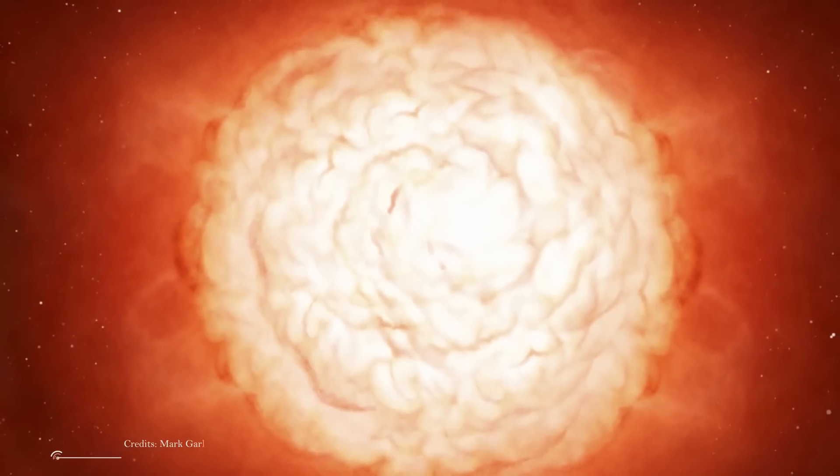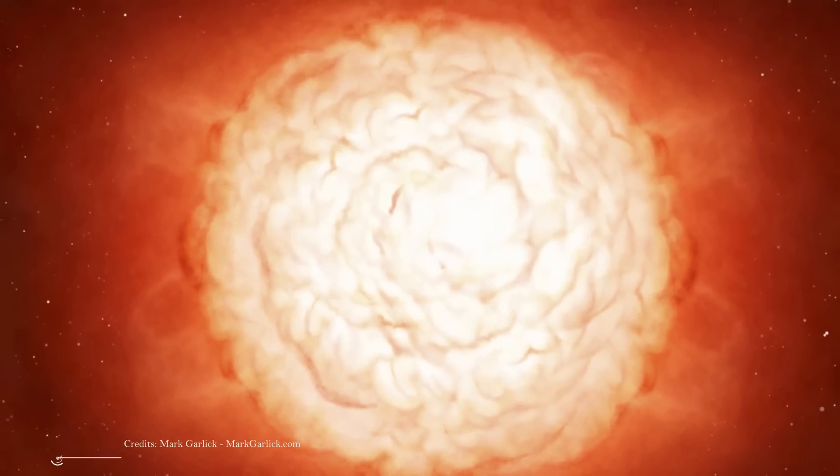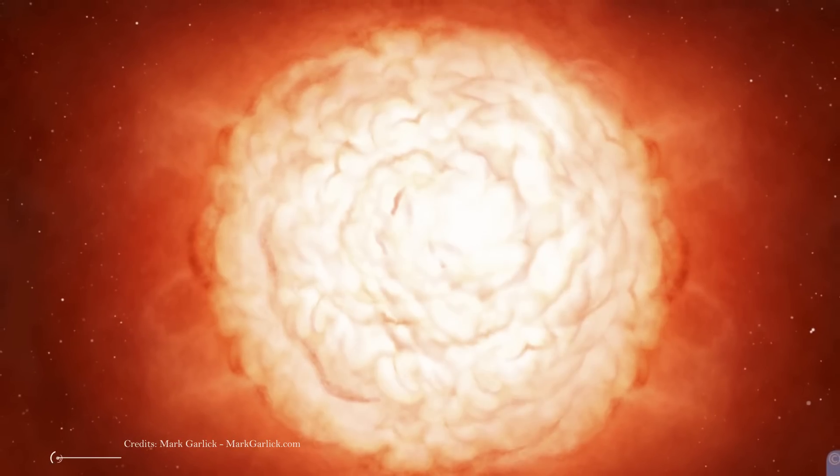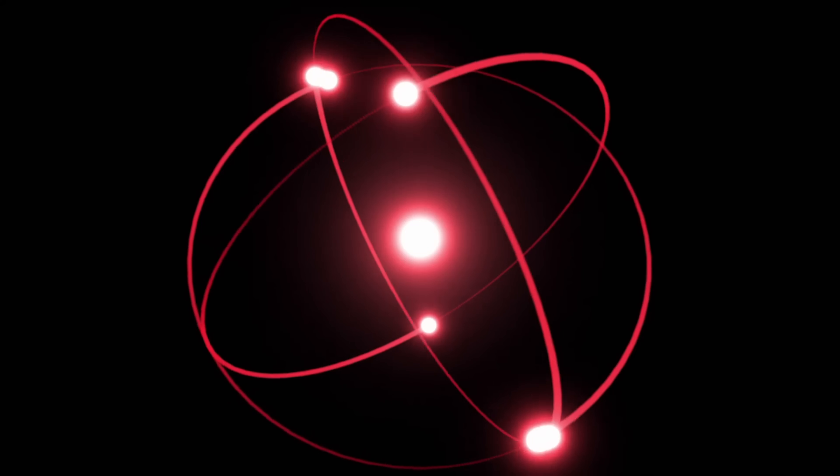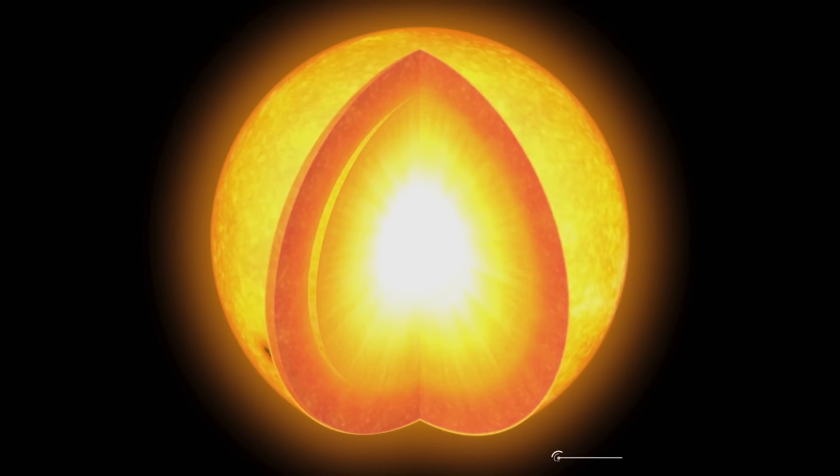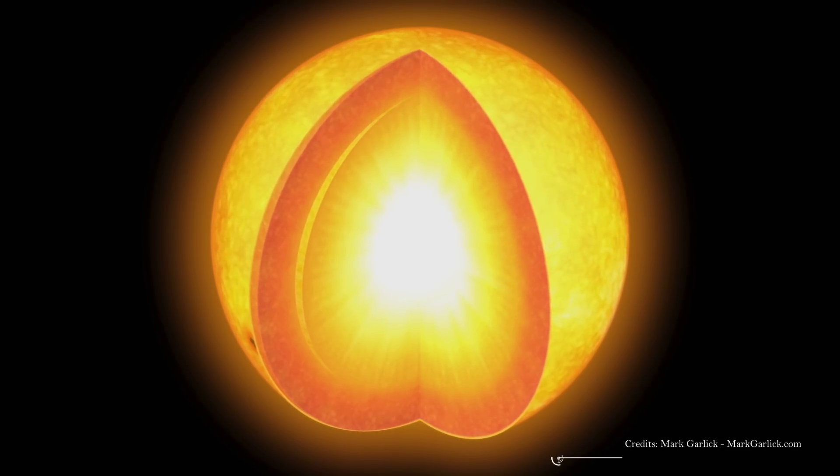Whatever caused the dimming has to have occurred from somewhere outside the star, rather than from a fundamental alteration in Betelgeuse's internal activities. This is due to the fact that modifications to the fusion processes do not occur in a matter of months. The core just has too much mass, and the energy generated by fusion processes are simply too great to sustain such rapid fluctuations.